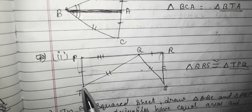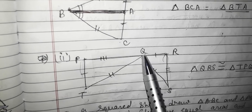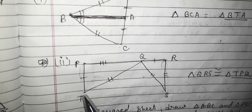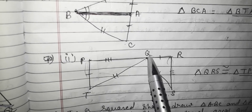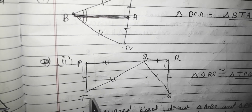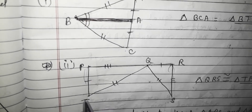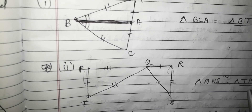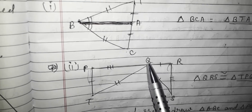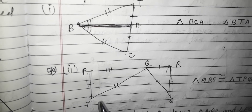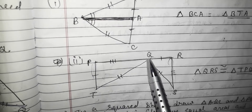I will start from T, which has the first tick mark, then go to P which has the three tick marks. So the right order for the second triangle is T, P, Q. Triangle Q, R, S is congruent to triangle T, P, Q — because in the first triangle I start from 1 and go to 3, and in the second triangle I also start from 1 and go to 3.